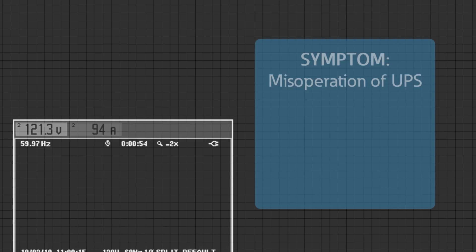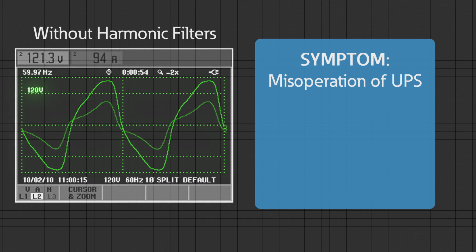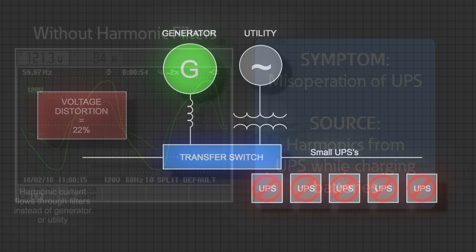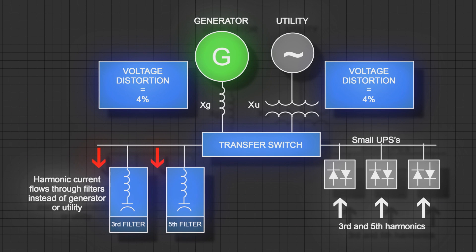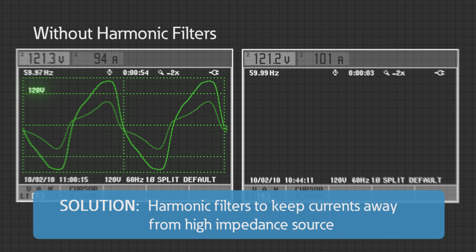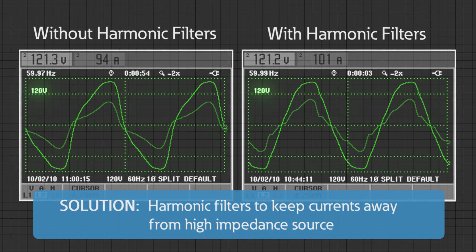So what did you figure out in that case? The symptom was the misoperation of the UPSs, and they were also the source of the harmonics interacting with the high impedance of the generator. The solution was to design and build two harmonic filters — third and fifth harmonic filters — so that the voltage distortion was limited to a similar level no matter which source the system was running on.